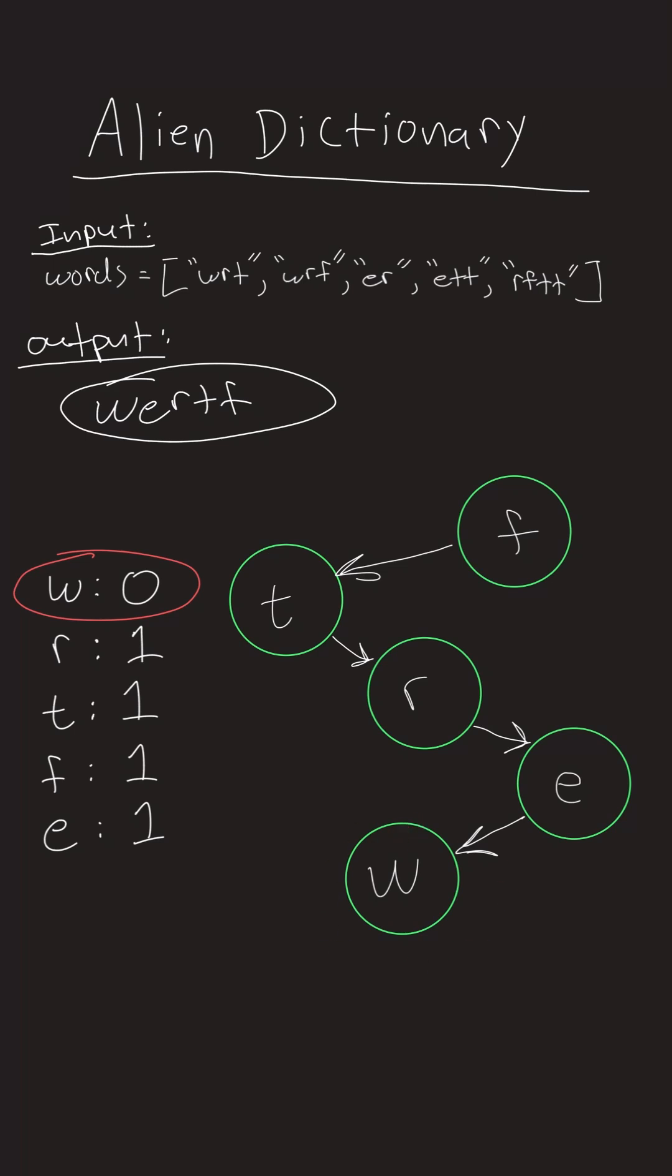Then, perform a topological sort. Start with characters with no incoming edges. Keep going until all characters are processed.